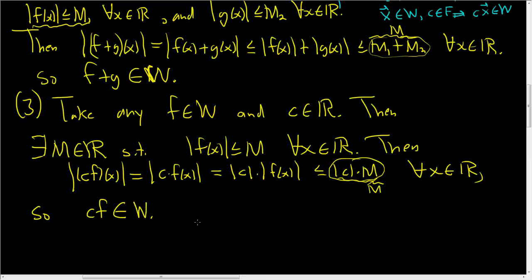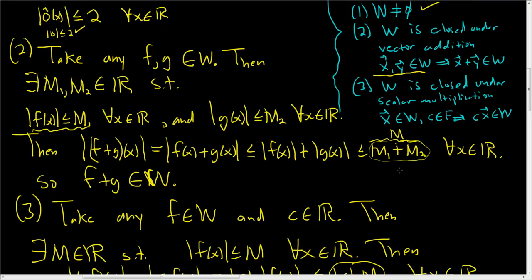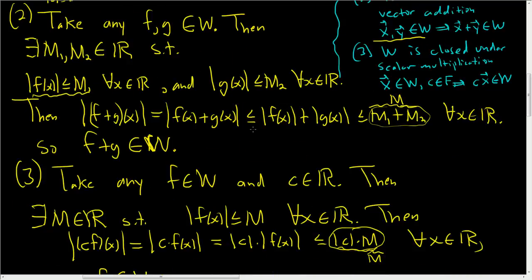So I kind of rushed through that really quickly, but hopefully it makes sense. So therefore W is a subspace. Let me go ahead and write that down. So therefore W is a subspace. But hopefully it made some sense. I wanted to keep the video short. Basically, you just check all three conditions very carefully. And we did have to use the triangle inequality right here. This was the triangle inequality. The absolute value of A plus B is less than or equal to the absolute value of A plus the absolute value of B. But other than that, it wasn't too bad. That's it.